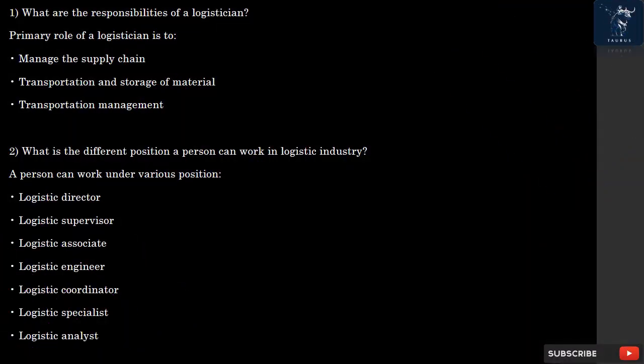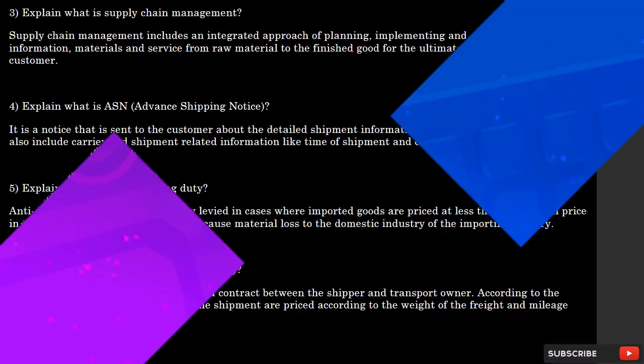Question 1: What are the responsibilities of a logistician? The primary role of a logistician is to manage the supply chain, transportation, and storage of material. A person can work under various positions in the logistics industry, including Logistic Director, Logistic Supervisor, Logistic Associate, Logistic Engineer, Logistic Coordinator, Logistic Specialist, and Logistic Analyst.